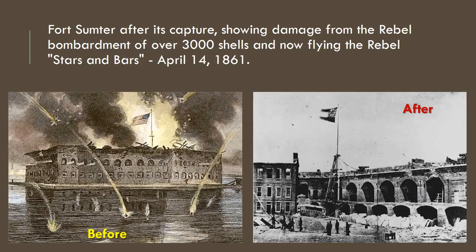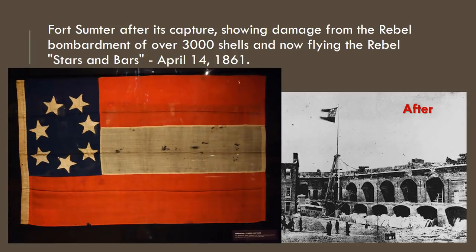Check out these images showing Fort Sumter before the attack with the American flag flying, and after its capture showing the damage from the rebel bombardment of over 3,000 shells and now flying the Confederate Stars and Bars two days after the battle. Here is a photo of the actual flag that flew at Fort Sumter after the Confederate victory.